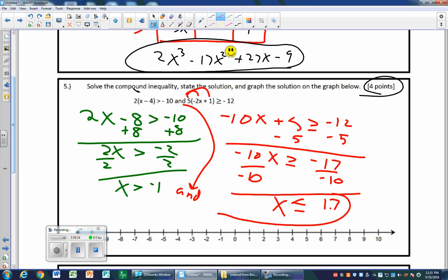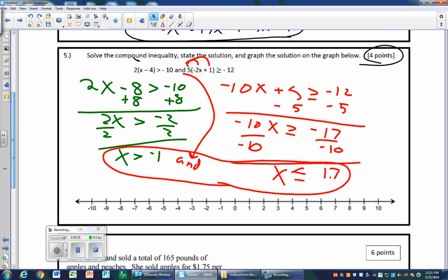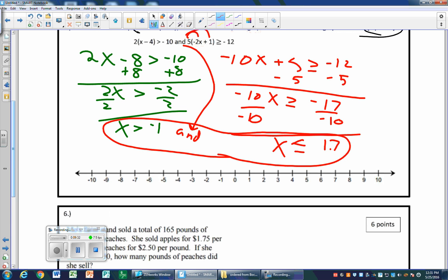So stating the solution is right there. If I have to do it in set builder notation, I'll do it as soon as I graph it. The first thing I notice, the green one, is x is greater than negative 1. It's an open circle on negative 1, and x is less than or equal to 1.7. So here it's going to be filled in circle at 1.7. Does 0 make it true? Is 0 bigger than negative 1 and less than 1.7? Yes. So I do shade in between.